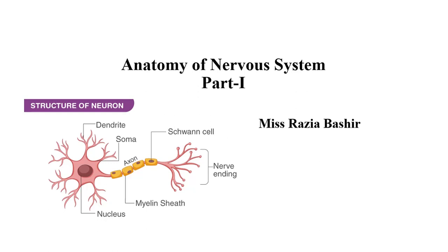The Nervous System is a highly complex part of the human body that coordinates its actions and sensory information by transmitting signals to and from different parts of the body. The Nervous System detects environmental changes that impact the body, then works along with the endocrine system to respond to such environmental changes. The Nervous System uses both electrical and chemical means to send and receive messages.